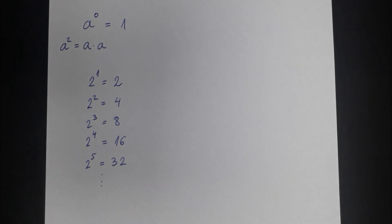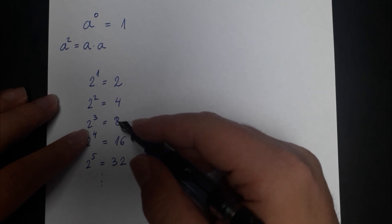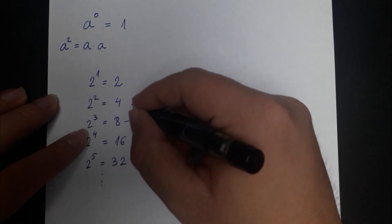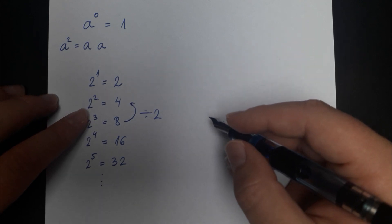Just as equally you can go backwards and then the numbers get smaller. As the power decreases you divide by 2. So 2 cubed is equal to 8 and when you divide by 2 you get that 2 squared is equal to 4.